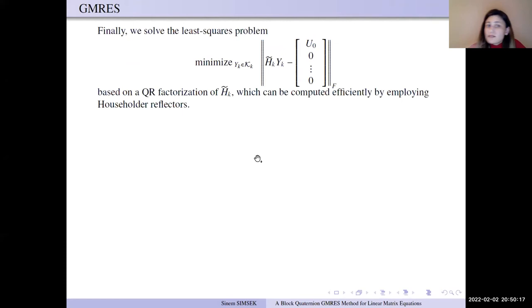Finally, we solve the least squares problem by employing QR factorization of r0 and orthogonality of Q1 to Qk. We solve the least squares solution Hk tilde Uk equals [U0; 0; 0] matrices. We want to find the minimum of such equation.